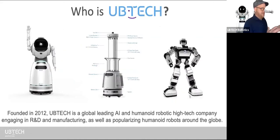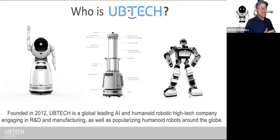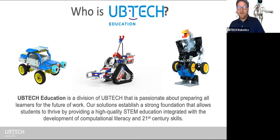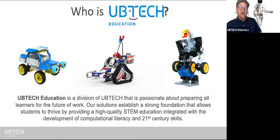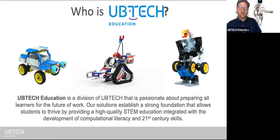Before we dive into the topic, let me quickly introduce UBTech. UBTech is a global leading AI and robotics company specializing in developing robots for enterprise, industrial, and educational uses. Christina and I both work in a division that develops curriculum and robotics specifically designed for classroom use. What makes us different is that we really specialize in developing high-quality STEM educational resources that integrate 21st century skills in a well-packaged integrated STEM format.